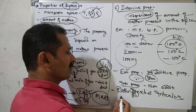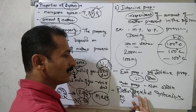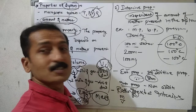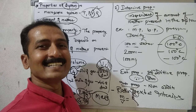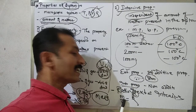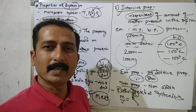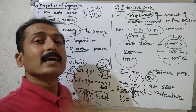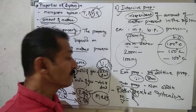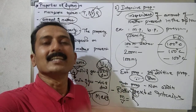For example, take mass and volume. Mass divided by volume is the ratio of two extensive properties. Mass is extensive, volume is extensive, and their ratio gives density — which is an intensive property. So the ratio of two extensive properties is an intensive property.